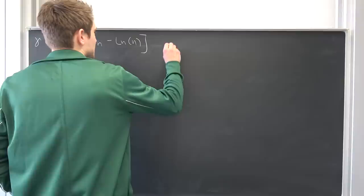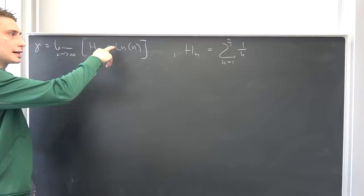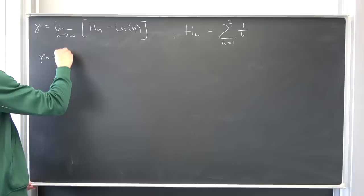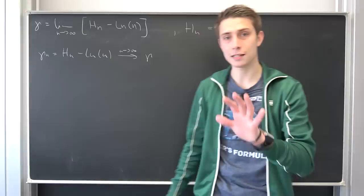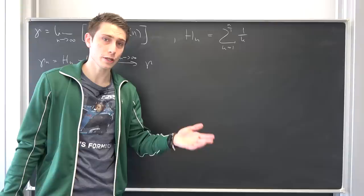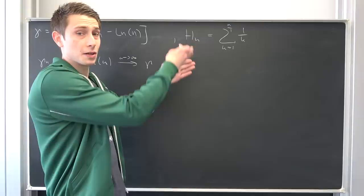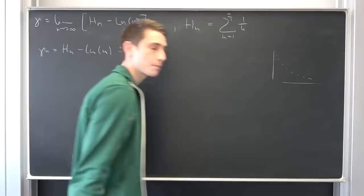Remember what the harmonic series actually is: the partial sums are sums from k=1 to n of 1/k. We are going to treat this as a sequence. We look at γ_n = H_n − ln(n), and in the limit as n goes to infinity we arrive at our gamma. The basic thing we want to do in analysis is: if you want to show that something converges, we want to show that it strictly decreases all the time, meaning it converges to a certain value — for example, it's bounded below and goes down.